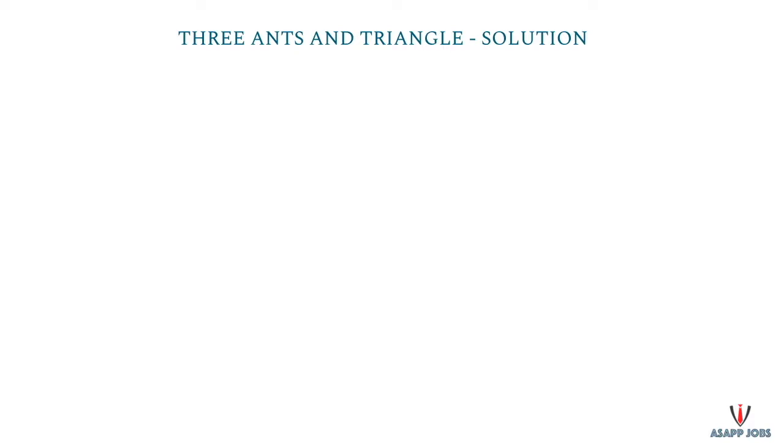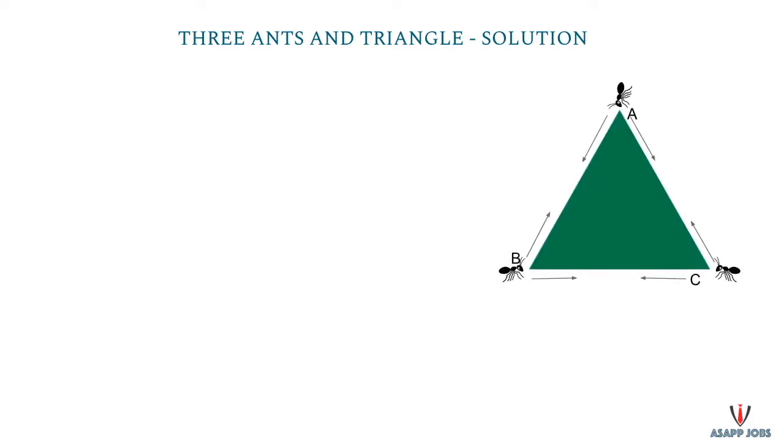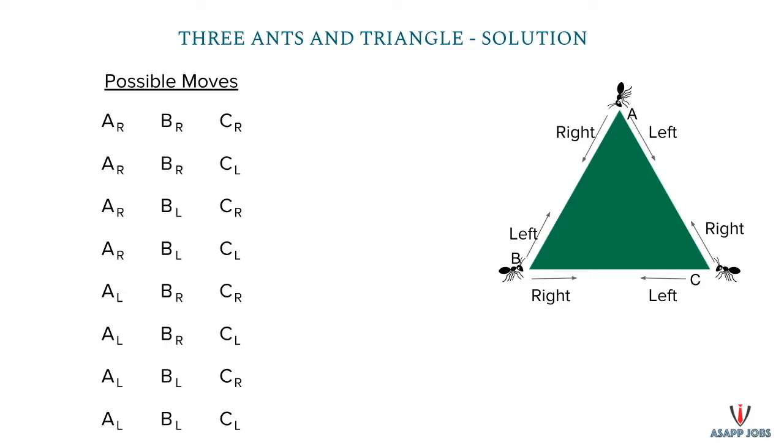Let's try it out logically first. The ants move either to the right side or the left side of the triangle. The three ants' moves can be represented in a table. These eight moves will be possible.